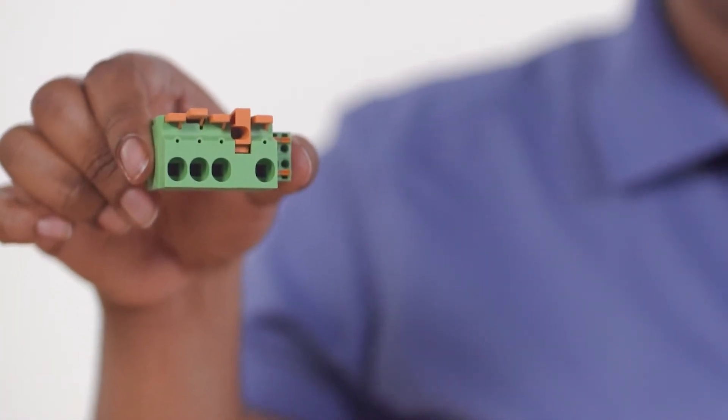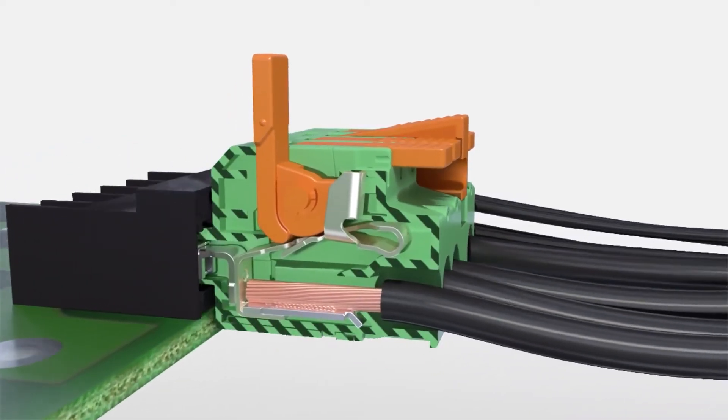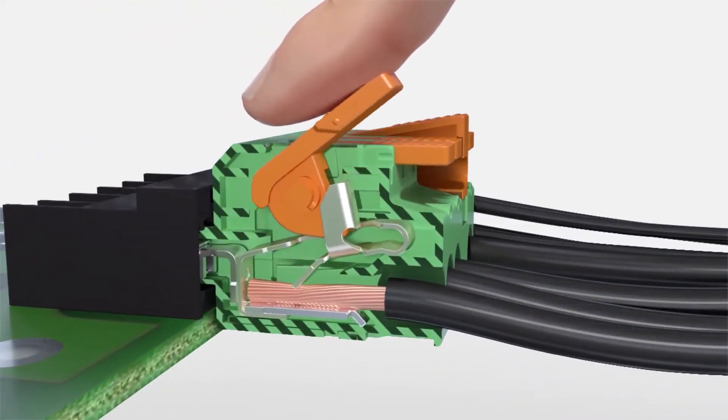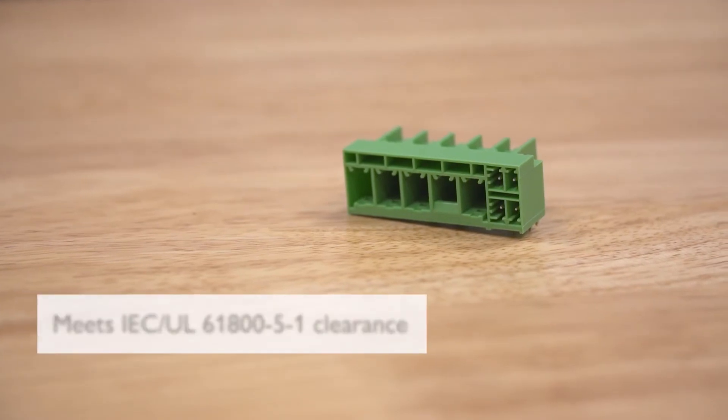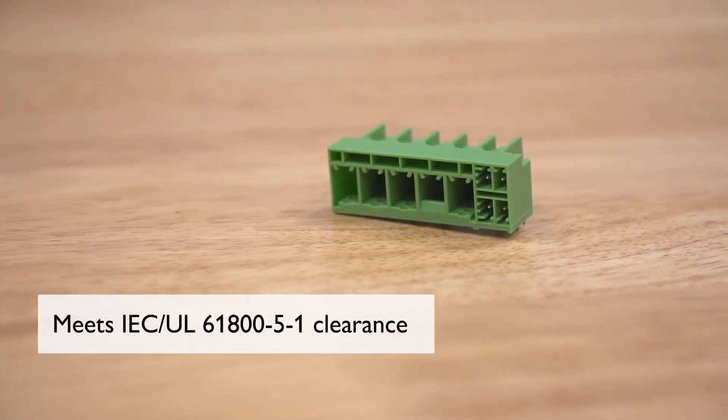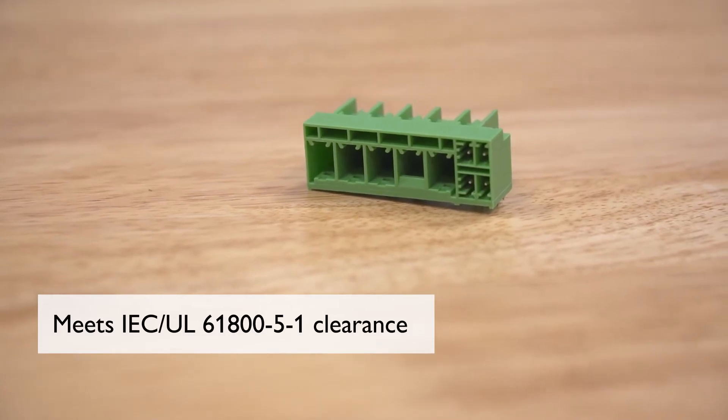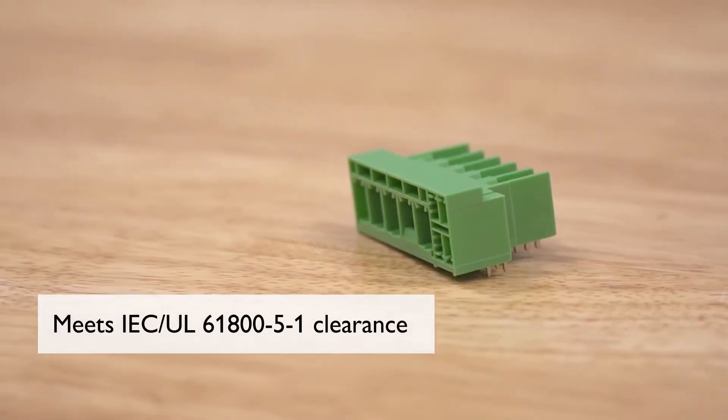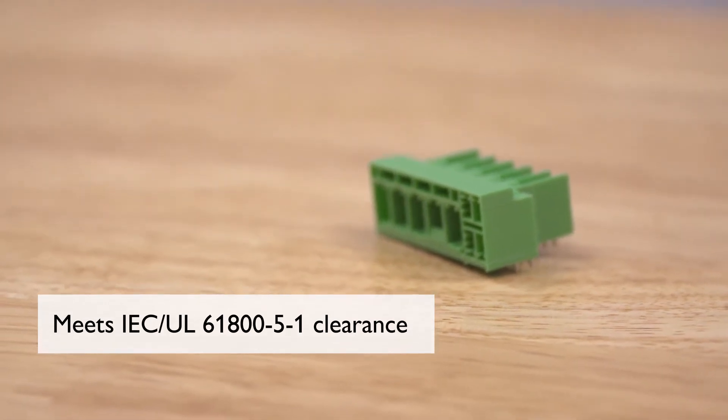Fortunately, the LPCH-6 from Phoenix Contact was designed with these trends in mind. The intuitive orange color-coded actuation lever allows the time-saving, tool-free connection of solid and stranded conductors with or without ferrules. The headers were designed to provide an additional 3 mm of clearance to meet IEC UL 61800-5-1. This is important as it provides an increased measure of safety in case someone touches an energized connector.